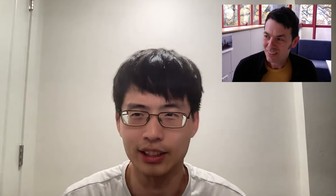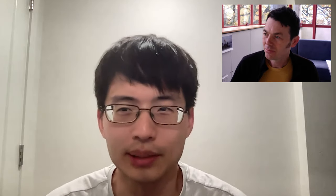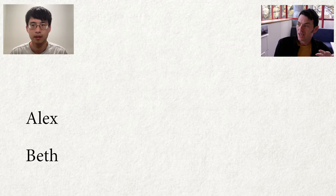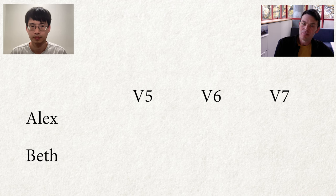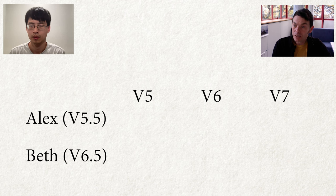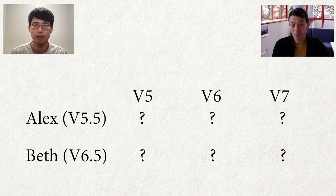Can you give us a deep dive on how exactly the algorithm works? A little example I can go through. We can consider the situation where climbers know their grade — the grade they can flash 50% of the time. Say we have Alex and Beth going to try three boulders graded V5, V6, V7. Alex thinks her grade is about 5.5; Beth thinks her grade is 6.5. Now we've got grades of the boulders and grades of the climbers, so we can compute the probability that they'll flash each boulder.